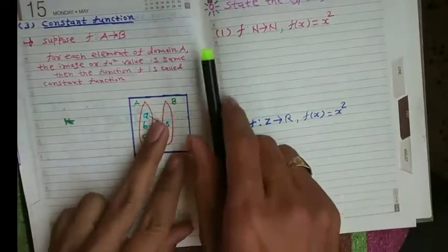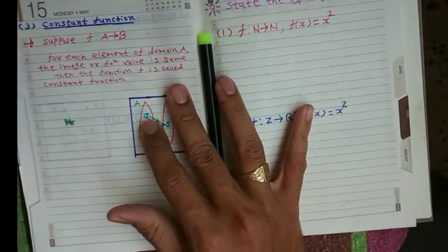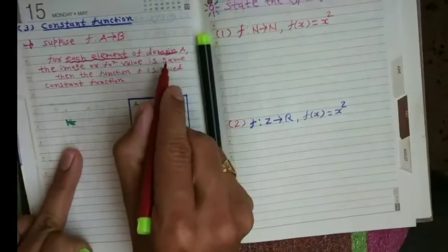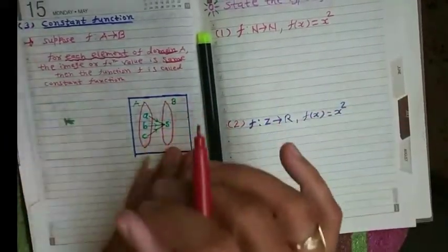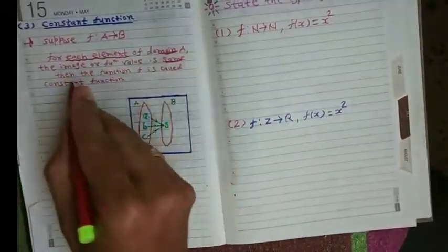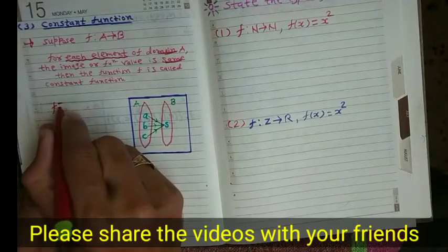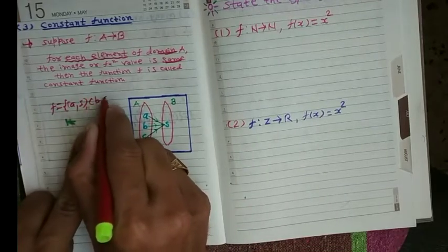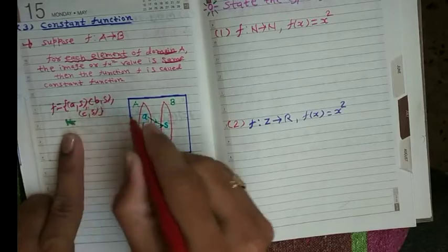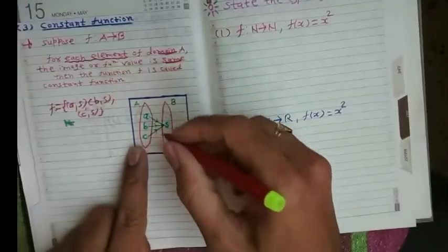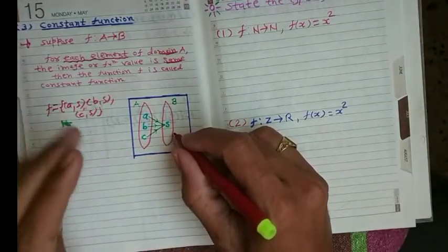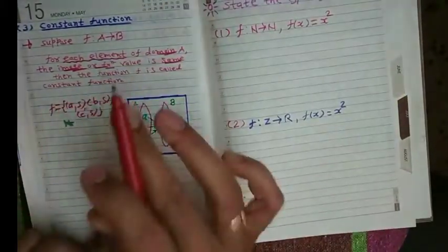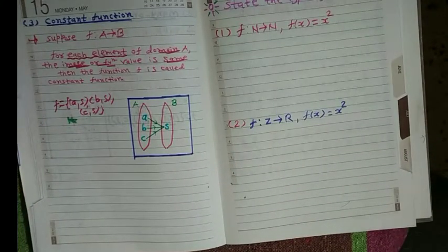Now let's discuss the constant function. Suppose f: A to B. For each element of domain A, the image or functional value is the same. We can write the function as f = {(a, s), (b, s), (c, s)}, meaning we take any value from domain A and it gives the value s. Since each element of domain A has the same image, the function f is called a constant function.